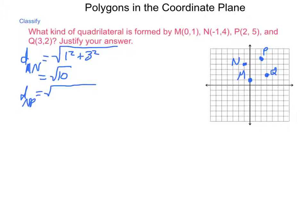The distance from N to P is equal to the square root. We have a horizontal change of 3 and a vertical change of 1. So, again, we have a square root of 10. So, we have two adjacent sides that are of the same length. That could be a kite. But, let's continue on.